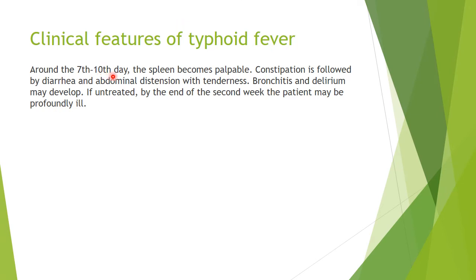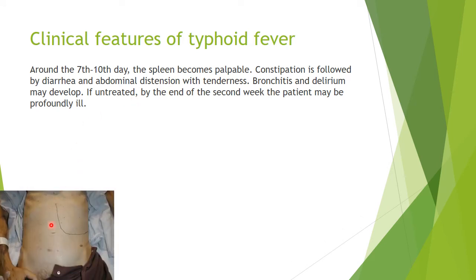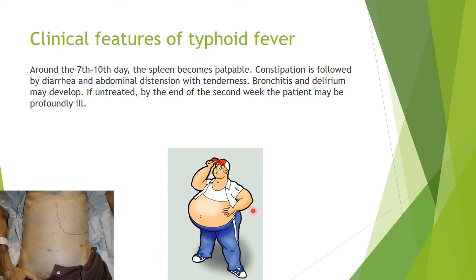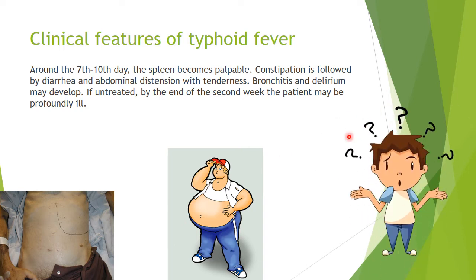Around the seventh to tenth day, the spleen becomes palpable. Constipation in adults is followed by diarrhea and abdominal distension with tenderness. Bronchitis and delirium may develop. So around seven to ten days, Jack's spleen has enlarged, his abdomen has become distended, there is tenderness and delirium — Jack is clearly confused. If untreated, by the end of the second week, around the 12th to 14th day, the patient may become profoundly ill.